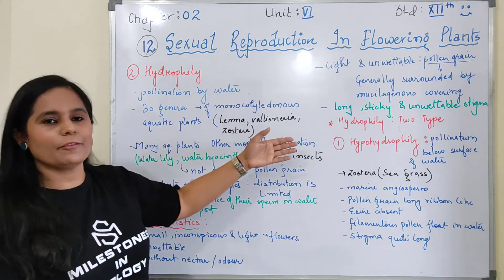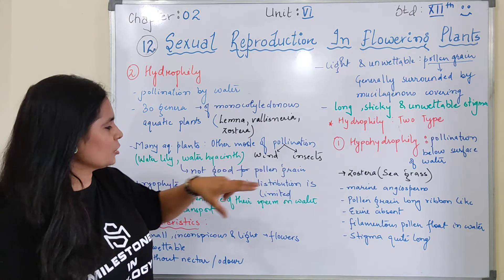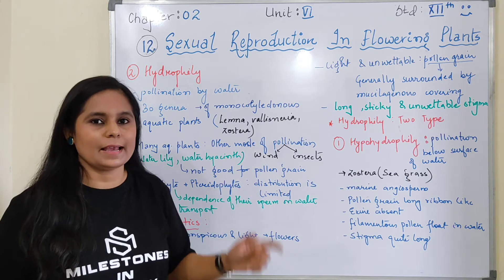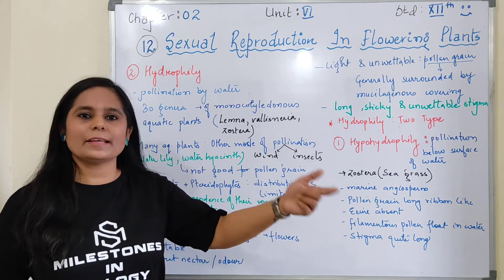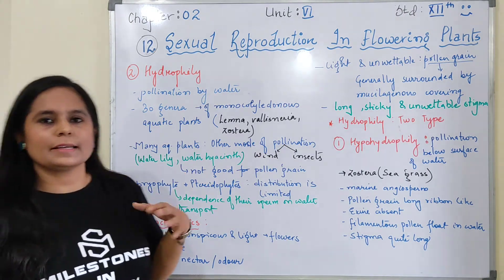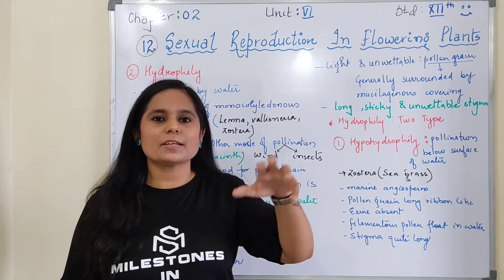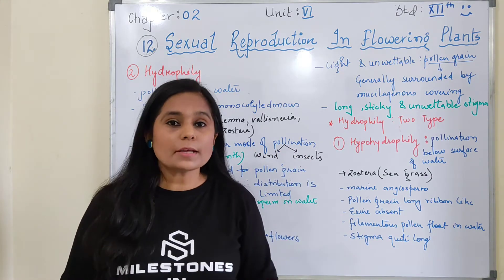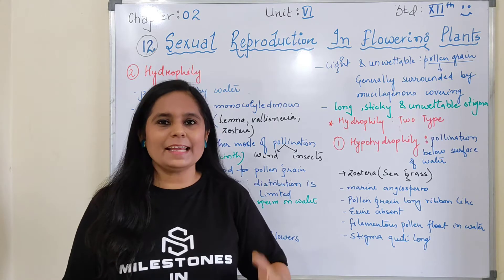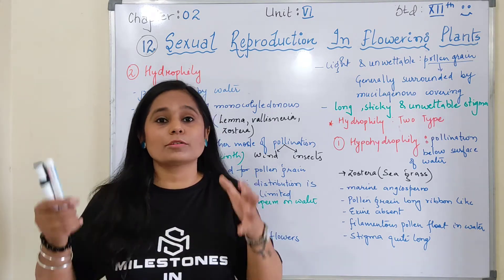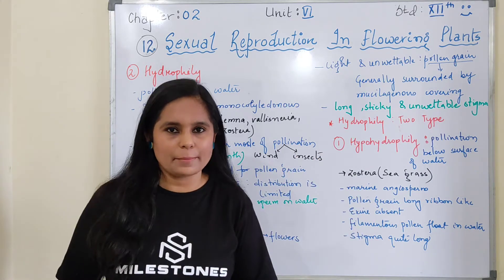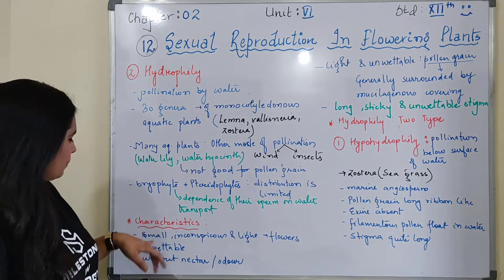Water lily and water hyacinth go for another mode of pollination because water is not good for their pollen grains. That is why they opt for other modes. Similarly, bryophytes - some people believe that their distribution is limited because their antherozoids move and pollinate through water, and there are very limited places where land and water are both closely placed, which is why their distribution is limited to particular areas.